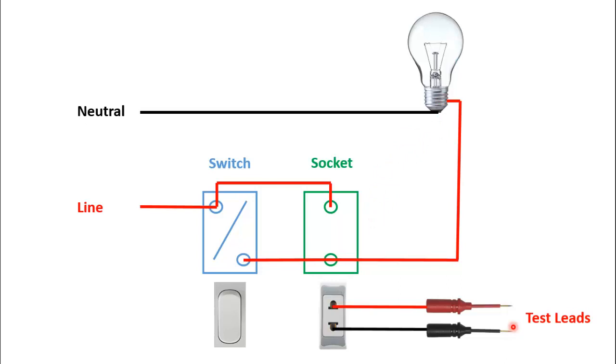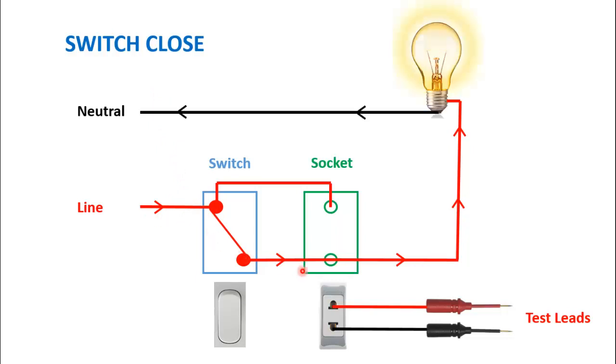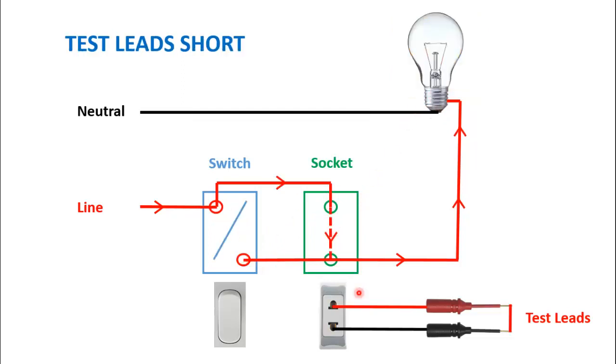Now I will run the animation and show you what happens when the switch is closed. So here you can see, as soon as the switch is closed, the circuit is completed through this switch and turns on the bulb. So here you can see, now the current is not flowing through the socket. This switch is used to test whether the bulb is working or not.